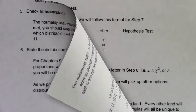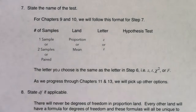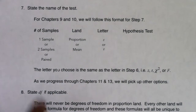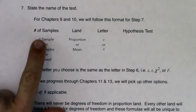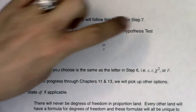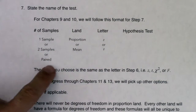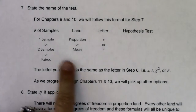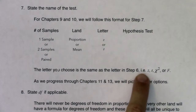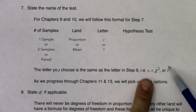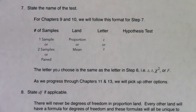For step seven, follow this format in chapters 9 and 10: give me the number of samples, which land you're in, which letter you're using, and the words 'hypothesis test.' For chapter 9, it was either one sample proportion Z hypothesis test or one sample mean T hypothesis test. When we move into chapter 10, you'll give me two sample proportion Z hypothesis test, two sample mean T hypothesis test, or paired mean T hypothesis test. The letter you choose here is the same as the letter in step six — for chapters 9 and 10, it'll be either Z or T; for chapter 11, chi-squared; and for chapter 13, F.